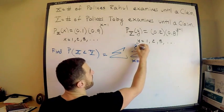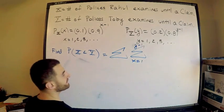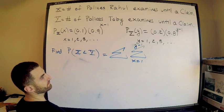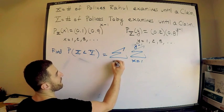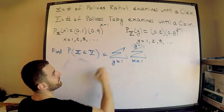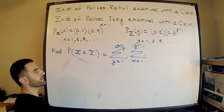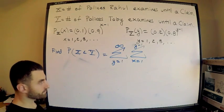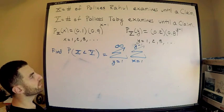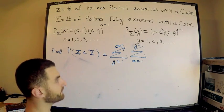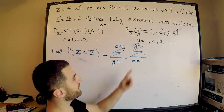X is less than Y. That means X, the smallest X can be, is absolutely one, and it's not equal to Y, so it has to go up to Y minus one. What is Y going to go from? Y is going to go from Y equals one up to infinity.